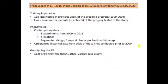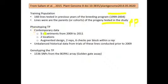In this study, the training population consisted of 168 lines accumulated over the years 1999 to 2004, with lots of historical data on those lines. These 168 lines were also the parents of the progeny that will be used as the prediction populations. For phenotyping of the training population, these 168 lines were tested in trials from 2009 to 2011 at two locations per year. They used an augmented design with two reps and six checks per block within a rep, and they also used unbalanced historical data from the initial assessment of these lines prior to 2009.